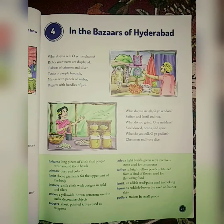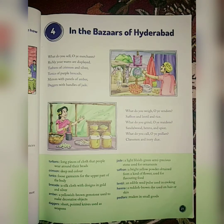'What do you weigh, O ye venders? Saffron and lentil and rice. What do you grind, O ye maidens? Sandalwood, henna and spice. What do you call, O ye peddlers? Chessmen and ivory dyes.'